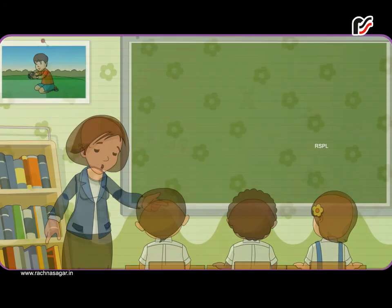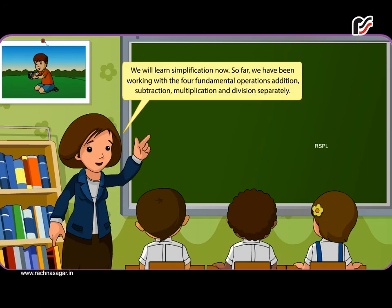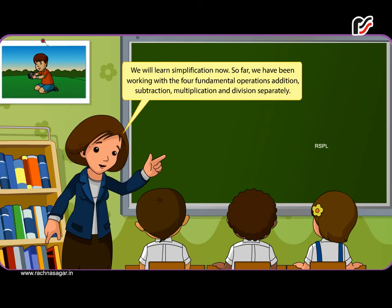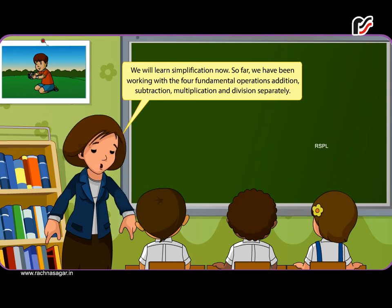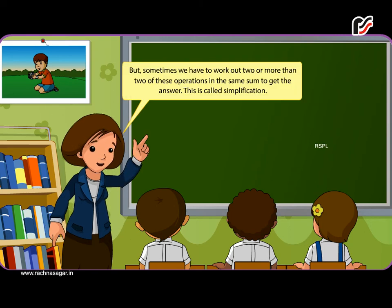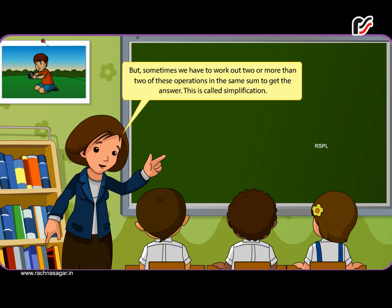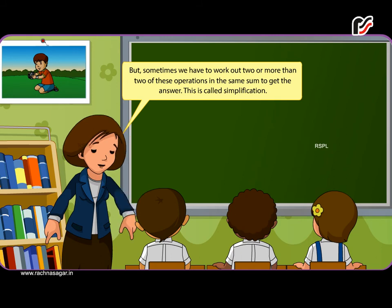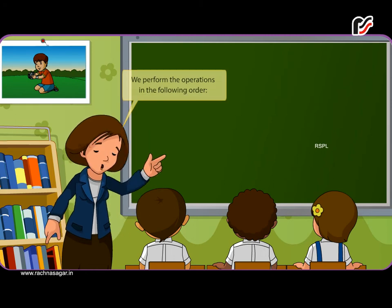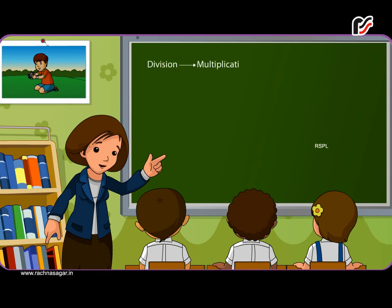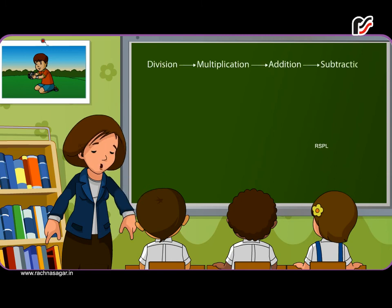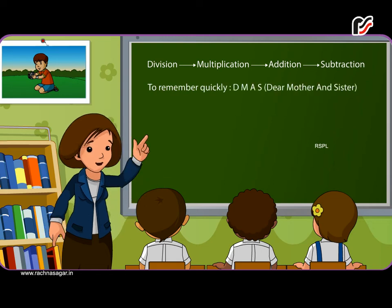Simplification: We will learn simplification now. So far we have been working with the four fundamental operations — addition, subtraction, multiplication, and division — separately. But sometimes we have to work out two or more of these operations in the same sum. This is called simplification. We perform the operations in the following order: Division, then Multiplication, then Addition, then Subtraction. To remember quickly: D-M-A-S — 'Dear Mother and Sister'.